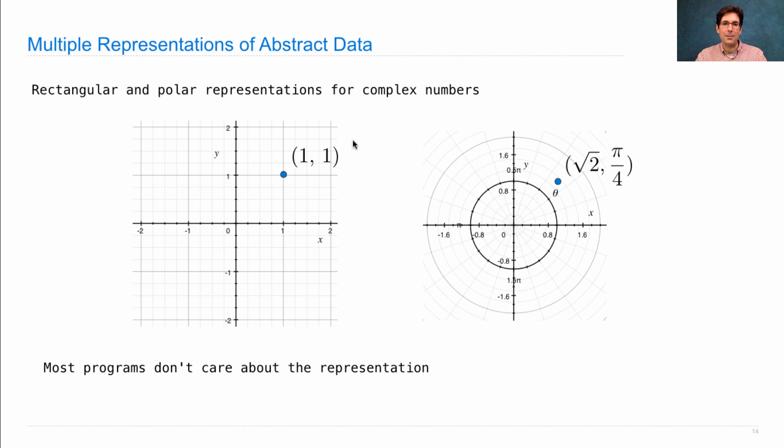Whether you use this rectangular representation or this polar representation really doesn't matter for most applications. If you just pass around points and put them in lists, it doesn't matter how they're represented. But for complex numbers, certain operations are easier to express in one representation or the other.